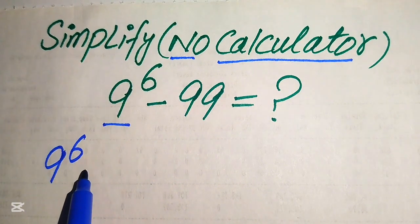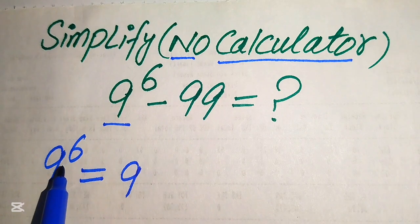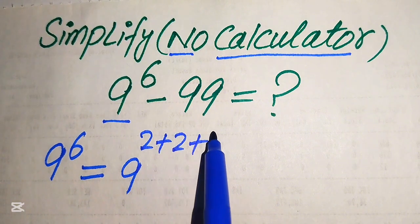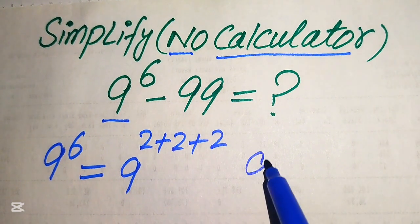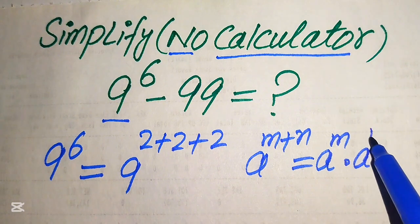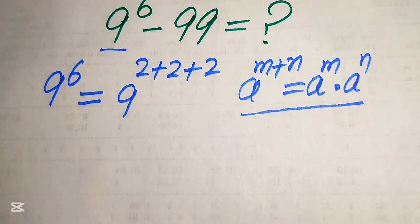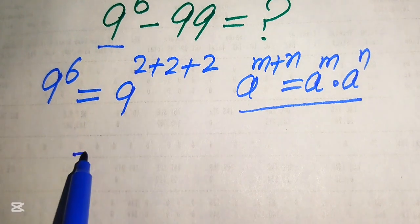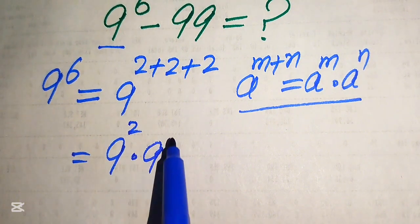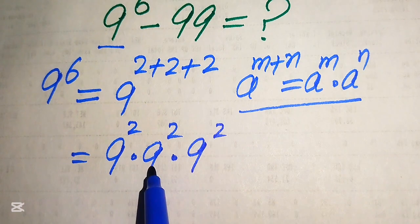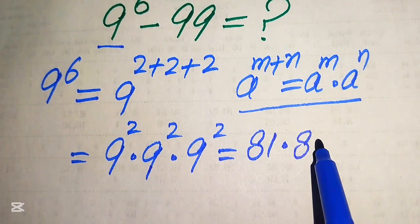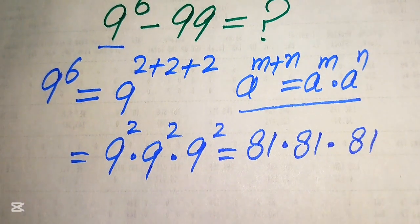For the value of 9 to the power of 6, we first break 6 and write it as 2 plus 2 plus 2, then apply the exponent law: a to the power of m plus n equals a to the power of m multiplied by a to the power of n. We expand this as 9 squared multiplied by 9 squared multiplied by 9 squared, and since 9 squared equals 81, we get 81 times 81 times 81.